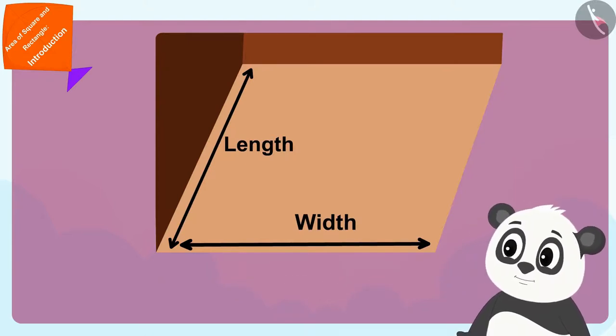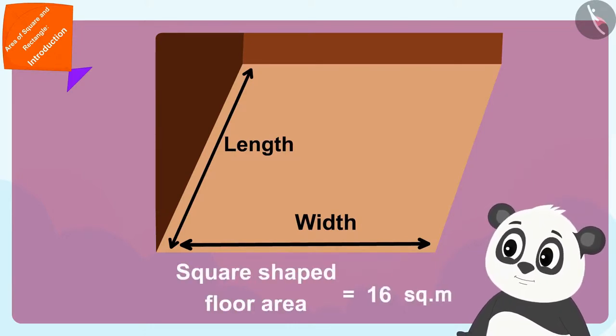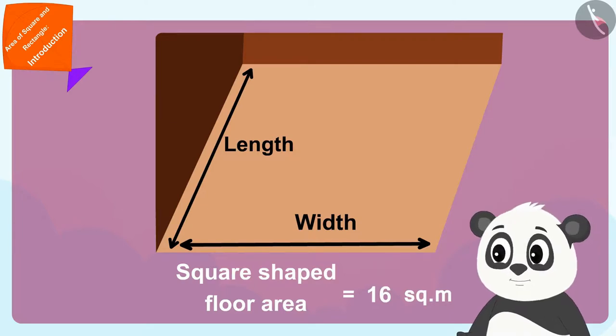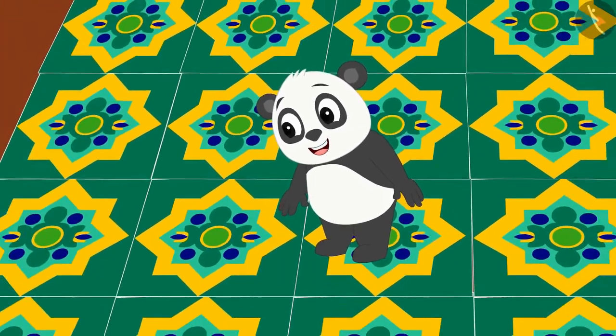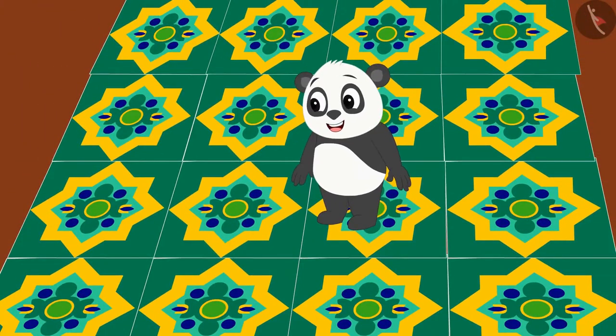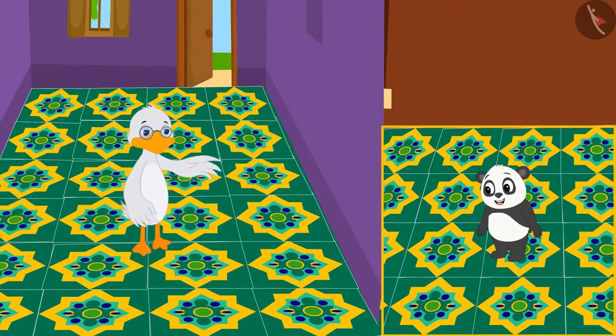In other words, Golu's square shaped floor has an area of sixteen square meters. Golu too covered his floor with those beautiful tiles. See, how beautiful Uncle and Golu's floors look.